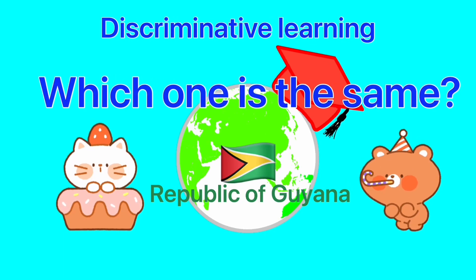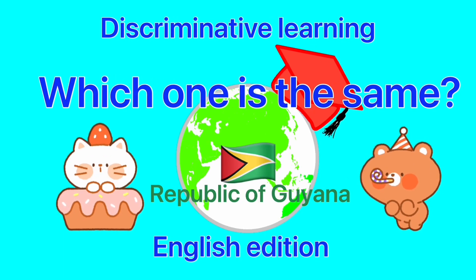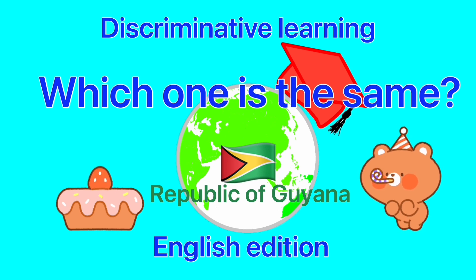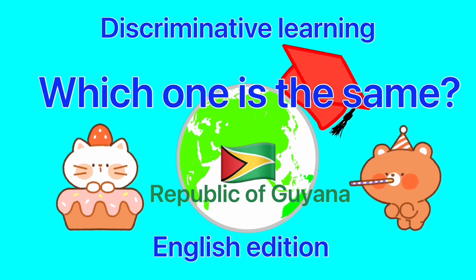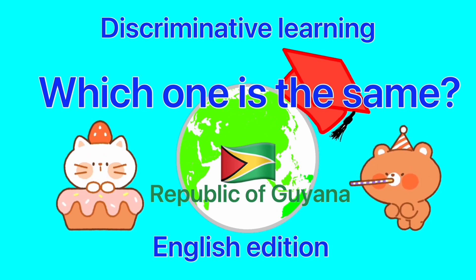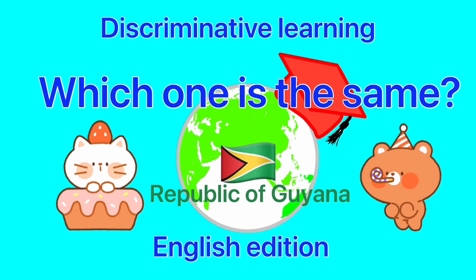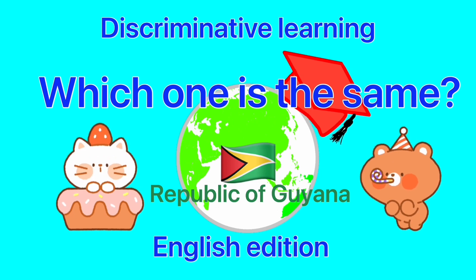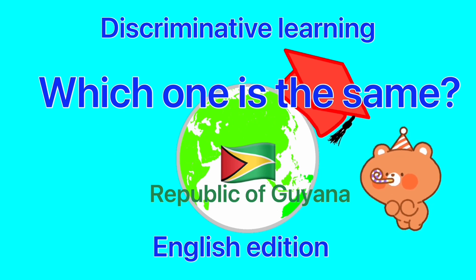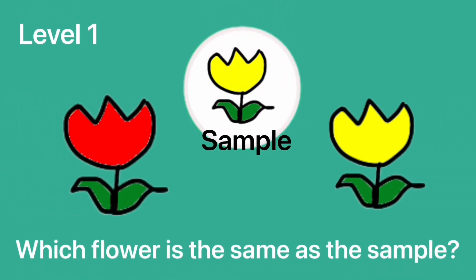Discriminative Learning: Which one is the same? English edition. Level 1.